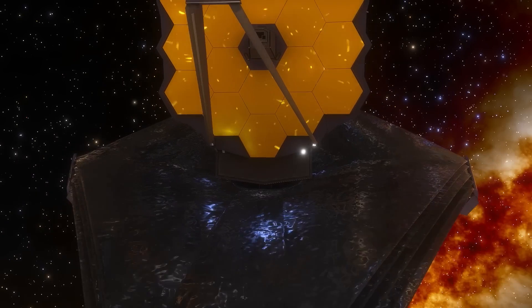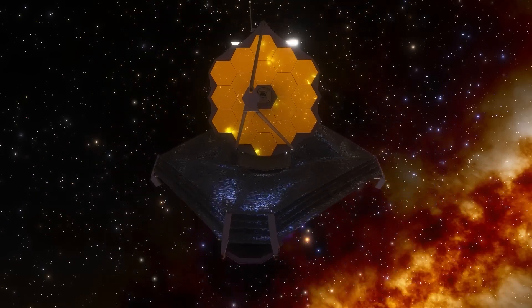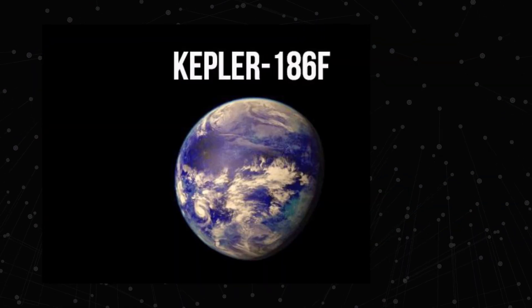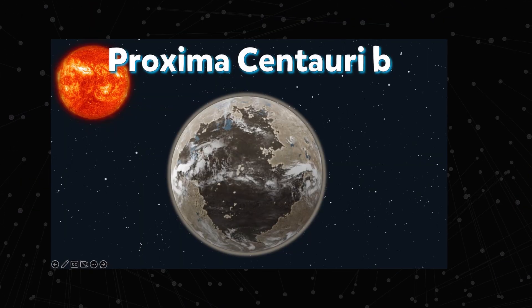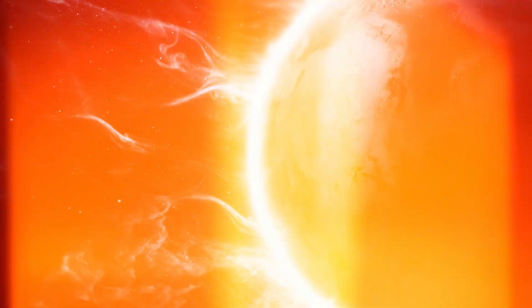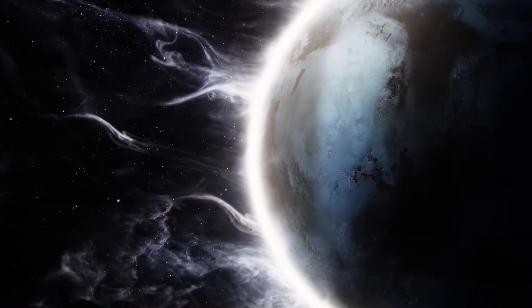But they have listed TRAPPIST-1b among exoplanets that say there might be some possibilities of life that will open up later. Not only these, but the James Webb Telescope also discovered some other exoplanets K2-18b, Kepler-186f, Proxima Centauri b, and Ross-128b that are said to have great potential of generating life.